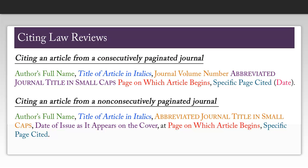The only difference for a non-consecutively paginated journal article is that you will not have a volume number. Instead, after the abbreviated journal name, you will have the date of issue as it appears on the cover of the journal. This might look something like May 2012.